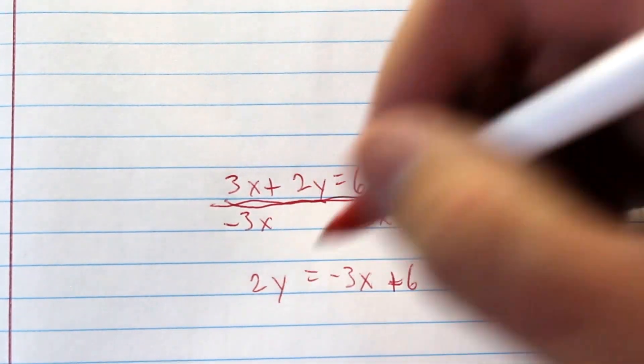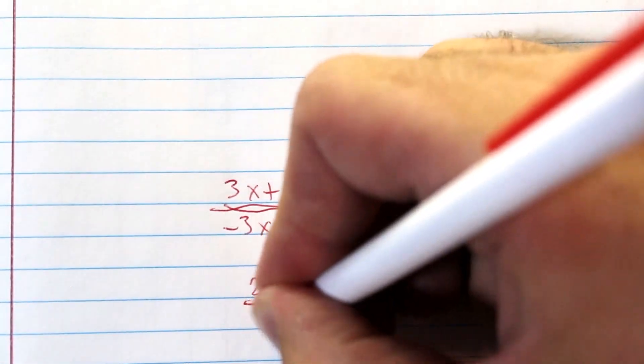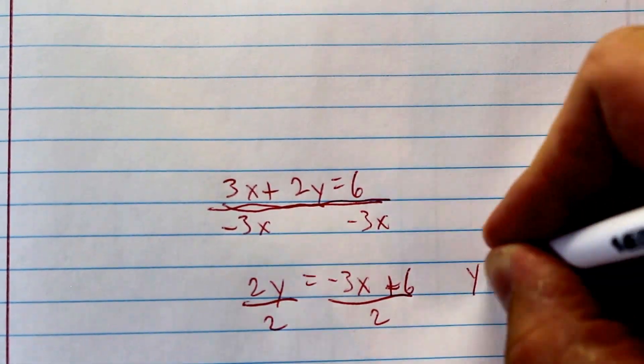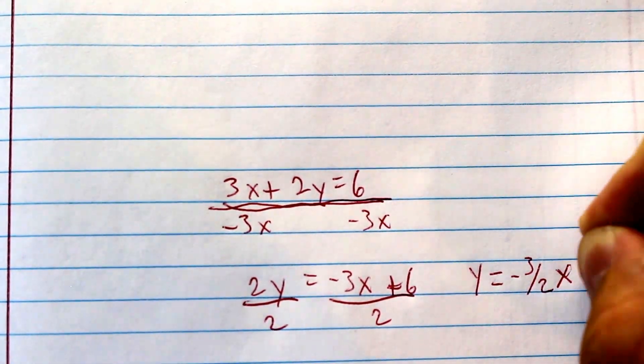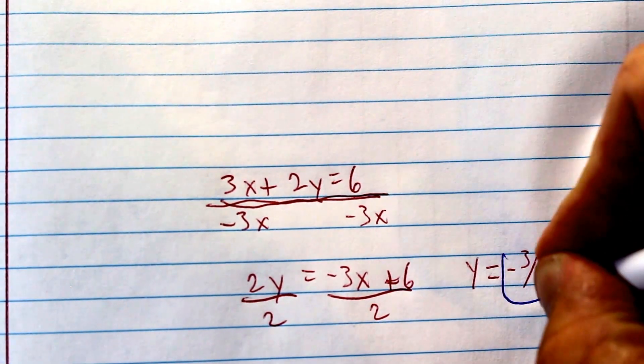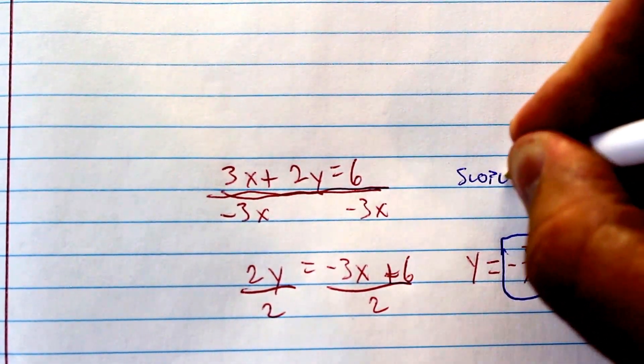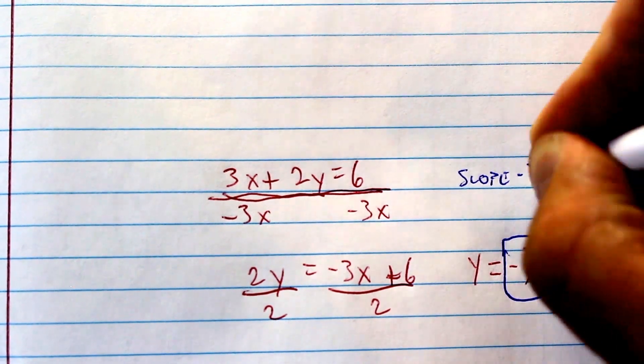We need to get rid of this 2 because we need y by itself. So we divide both sides by 2. This gives us our slope-intercept form of y equals negative three-halves x plus 3. So our slope is right here. That's the m value. So slope for this one equals negative three-halves.